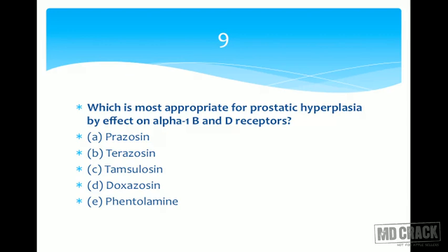Prazosin is primarily used for hypertension, so we set it aside. We have terazosin, tamsulosin, and doxazosin. If a patient has both hypertension and prostatic hyperplasia, terazosin and doxazosin are useful because they lower blood pressure and also act on receptors in the prostate to decrease obstruction to urine flow.